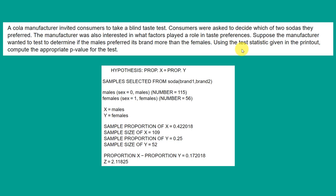The problem says: using the test statistic given in the printout, compute the appropriate p-value. They give you a lot of information there, and you can use this information to do the actual Z test for difference in proportions.